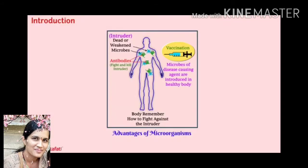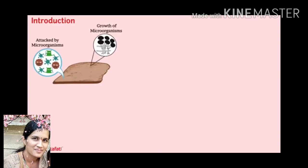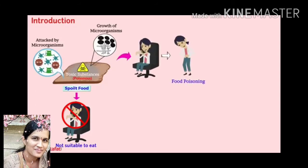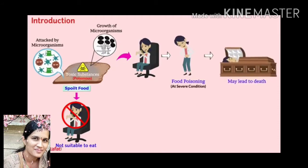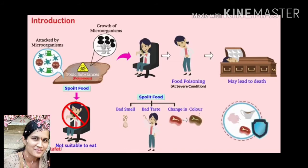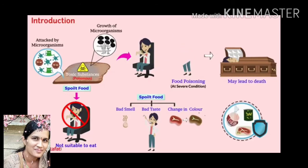Now we shall learn about food poisoning. Even though some microorganisms are beneficial to human beings, they can cause food poisoning. When leftover bread is seen after some days, we can see the growth of microorganisms on it, releasing toxic substances which are not suitable to eat. Eating such poisonous food can lead to severe conditions like food poisoning and may even lead to death. Signs that food is spoiled: bad smell, bad taste, or change in color. We should always cover food with coverings.